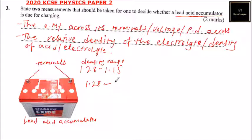We say at 1.28 it is fully charged. If it is 1.15 or below, it is discharged, so it needs to be charged.